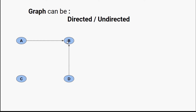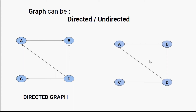In a directed graph, if there is an edge from D to B, I cannot traverse from B to D. From D to C there is a path, and from D to A there is a path. If I want to travel from A to D I can't, because there is no direct or indirect edge. This is your directed graph — when directions are present. In an undirected graph there are no directions, so if I want to travel from A to B I can, and vice versa is also true.